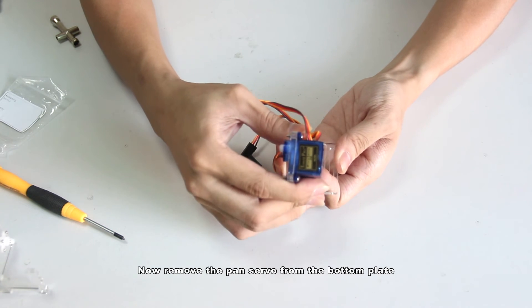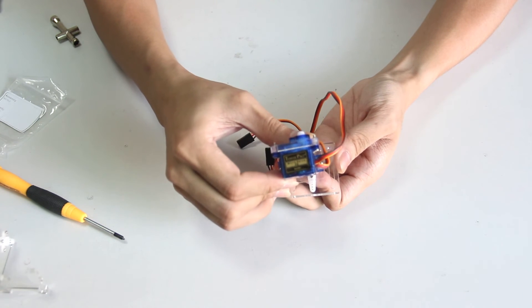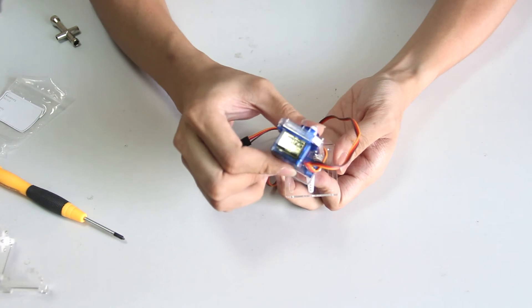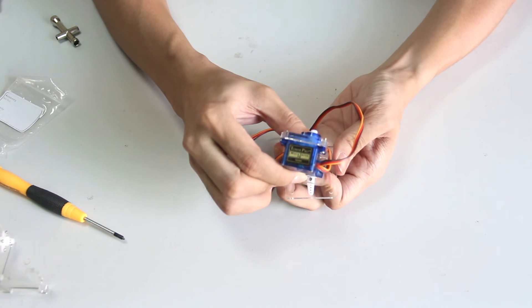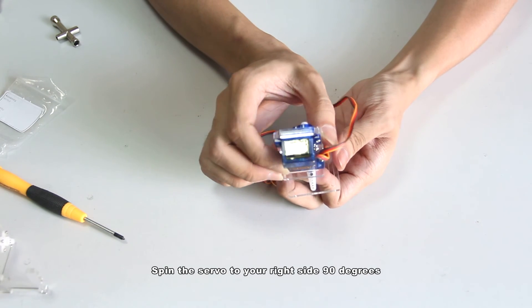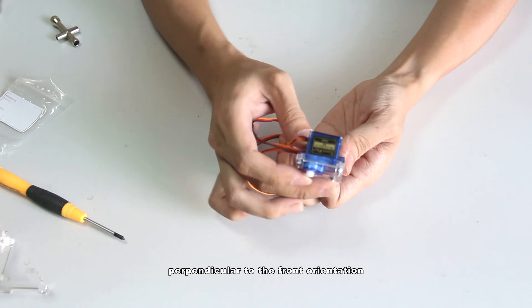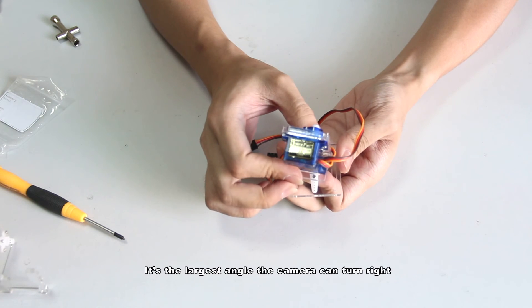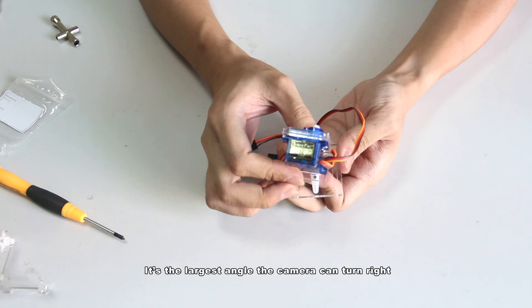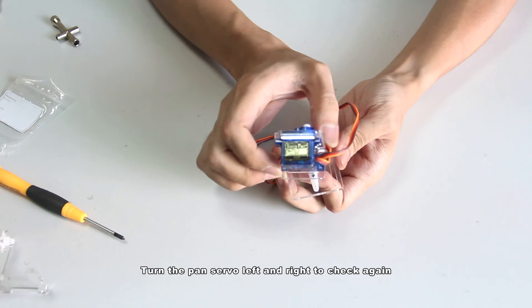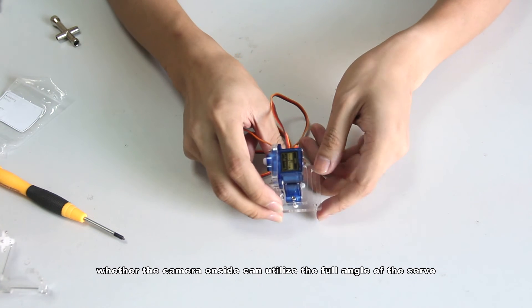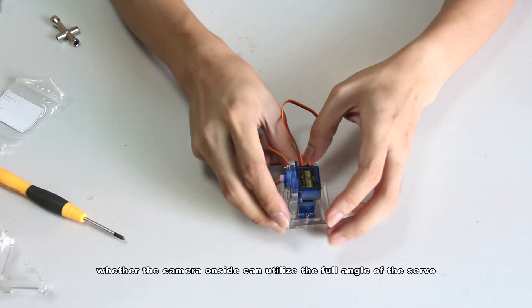Now remove the pan servo from the bottom plate. Spin the servo to your right side 90 degrees, perpendicular to the front orientation. It's the largest angle the camera can turn right. Turn the pan servo left and right to check again whether the camera on side can utilize the full angle of the servo. So the pan servo is done assembled.